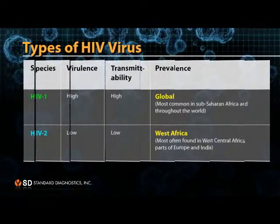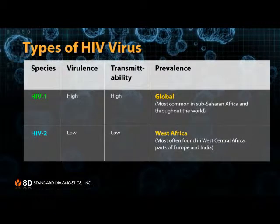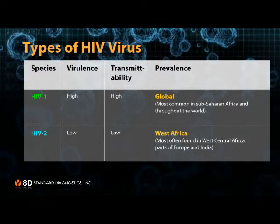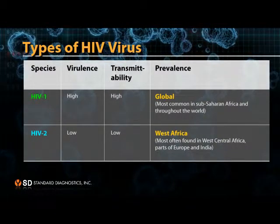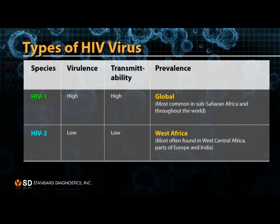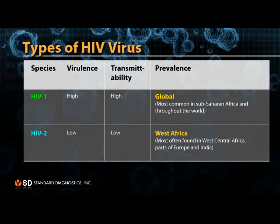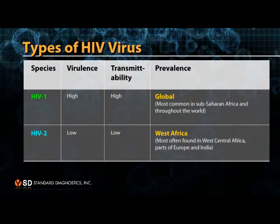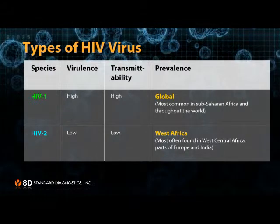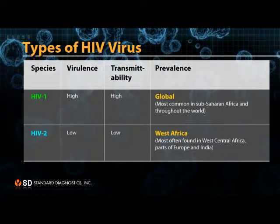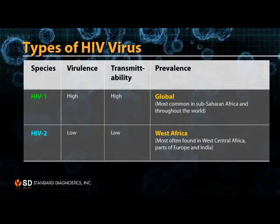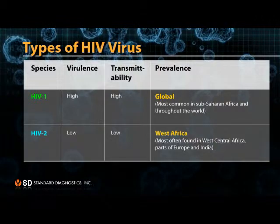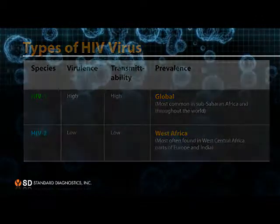HIV virus has two types: HIV type 1 and HIV type 2. HIV type 1 is more common throughout the world, and HIV type 2 is most often found in West Central Africa, parts of Europe and India.